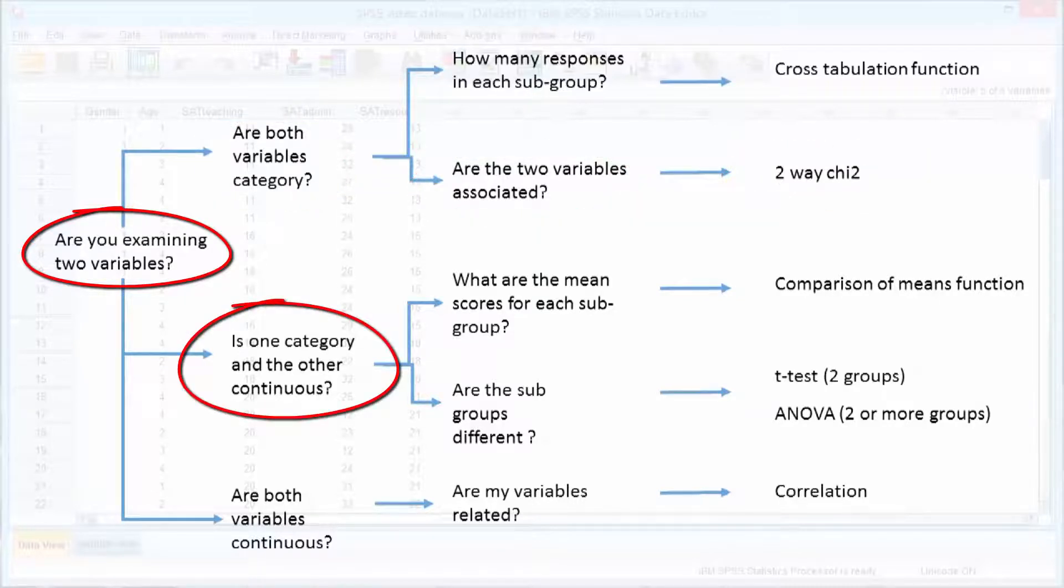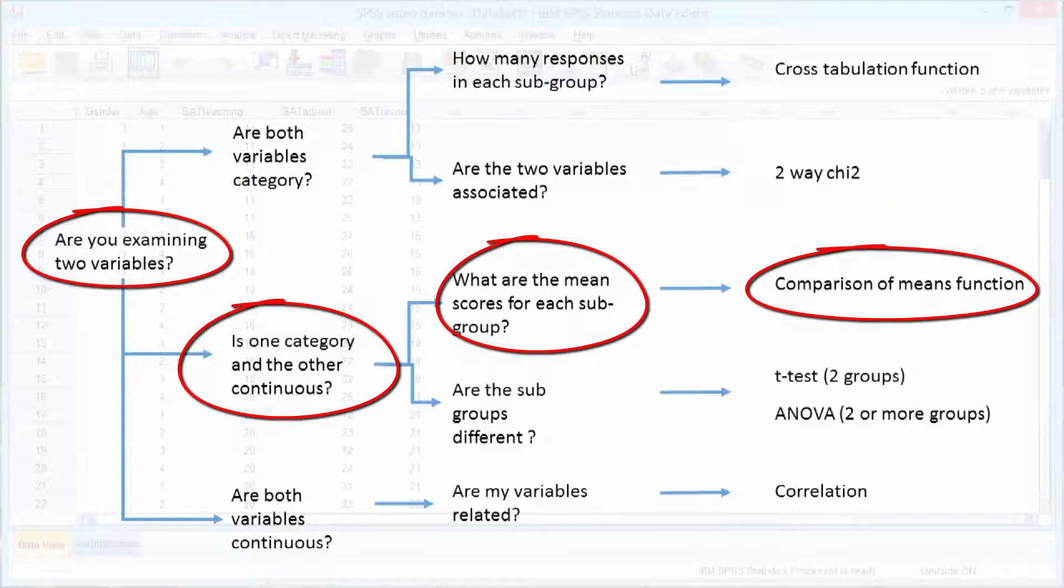If one variable is a category type variable and the other a continuous variable, then we use the comparing means function of SPSS to examine the differences between the subgroups.